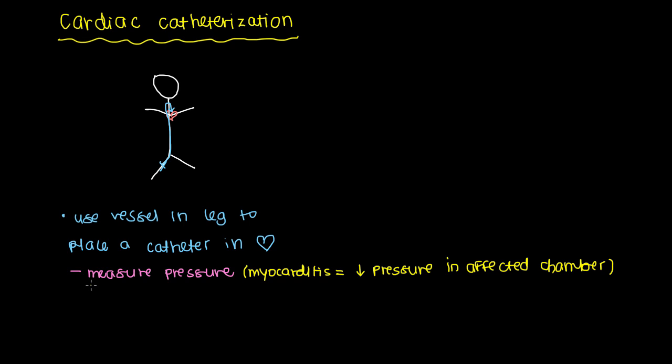And in pericarditis if you've got very constrictive. So constrictive pericarditis. When you measure the pressure in constrictive pericarditis. What you would get is equal pressure. Equal pressure in all chambers. So that would also be pretty diagnostic of constrictive pericarditis.